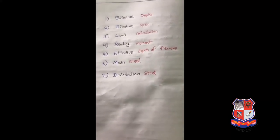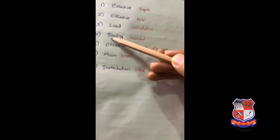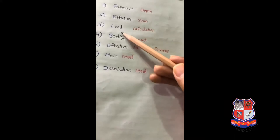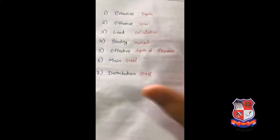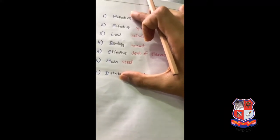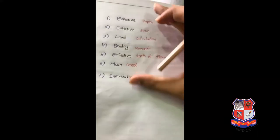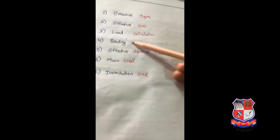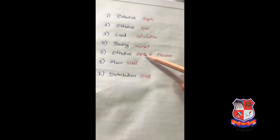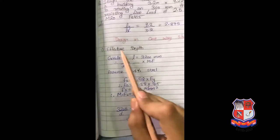For one-way slab there are a total of seven steps. The mnemonic to remember them: E-E-L-B-M-D. These are: Effective depth, Effective span, Load calculation, Bending moment, Effective depth of flexure, Main steel, Distribution steel. After these, if they ask you to check - two checks will come: bending shear check. Today in this lecture we will cover up to Effective depth of flexure, and in the next lecture we will cover main steel, distribution steel, and checks.